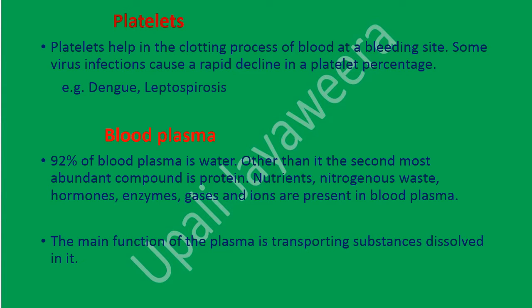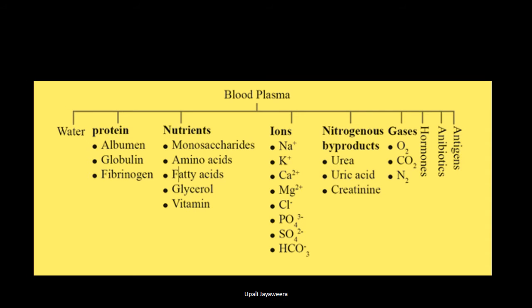The main function of plasma is transporting substances dissolved in it. The main constituents of blood plasma include proteins — albumin, globulin, and fibrinogen. Nutrients include monosaccharides, amino acids, fatty acids, glycerol, and vitamins. Ions present include sodium, potassium, calcium, magnesium, fluoride, phosphate, sulfate, and bicarbonate ions.